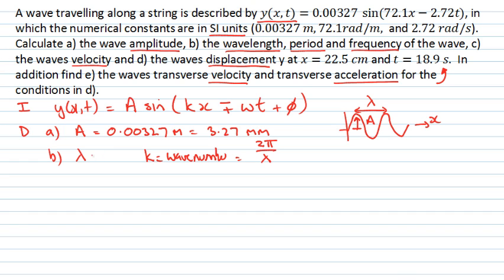So rearranging this equation, I can say that lambda is going to be given by 2π divided by k. I have that number from my expression here, that k is a number in front of the x. So 2π divided by 72.1. So that wavelength there is 0.087 metre is also 8.71 centimetres. So far we have found the amplitude and we have found the wavelength.